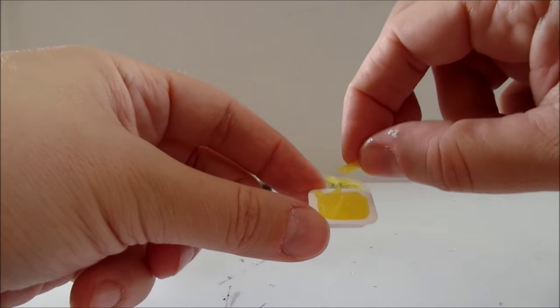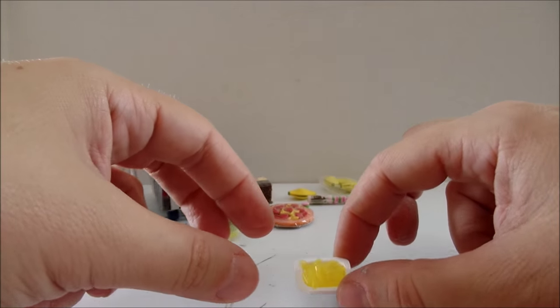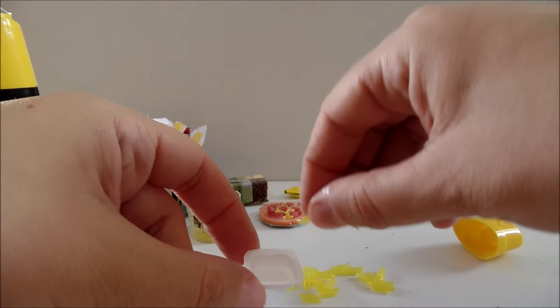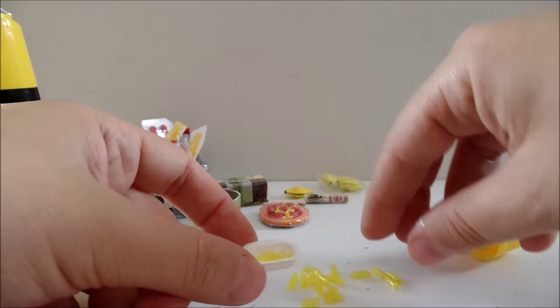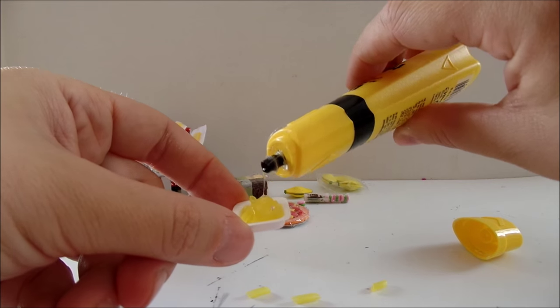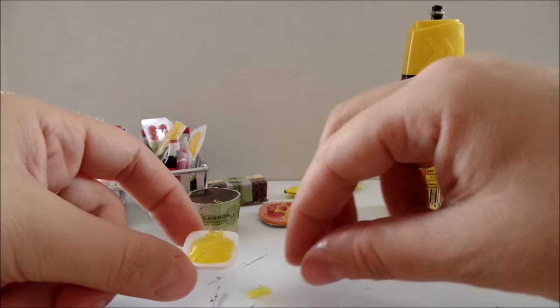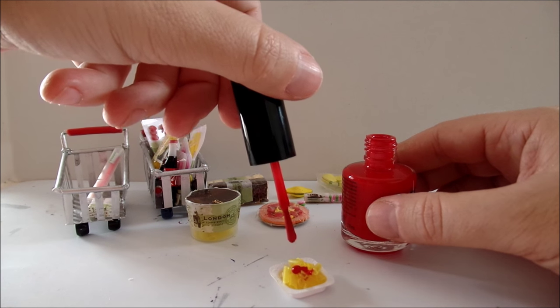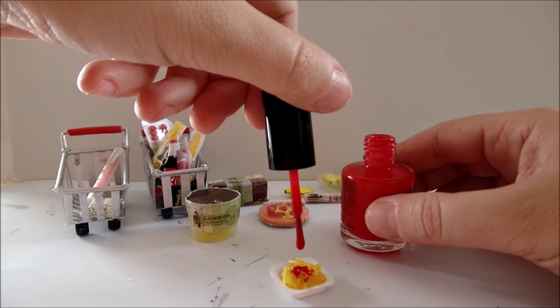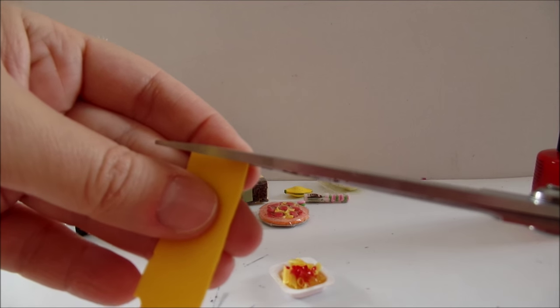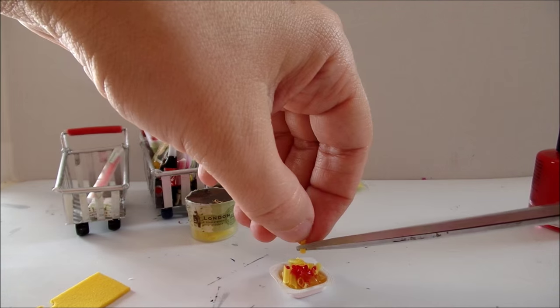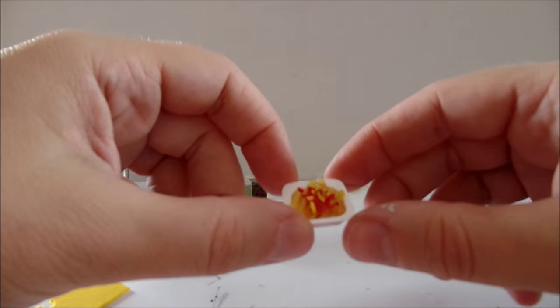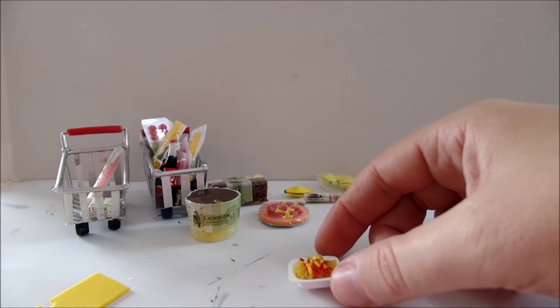Finally, you can make a pasta penne meal for your pet. We could glue a couple of penne into a plate. And add some red drops of red nail polish for the dressing. And also maybe add a little bit of cheese. And here we have a pasta meal for LPS.